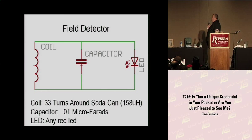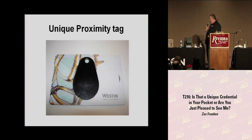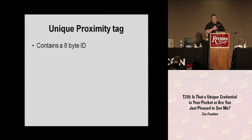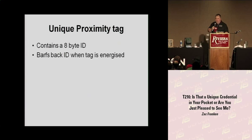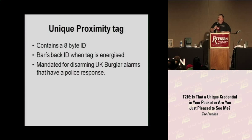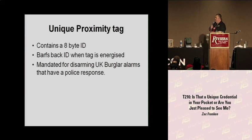We're going to move on to another proximity tag - in this case it's a unique tag, and we'll discover it's not quite so unique. These tags contain an 8-bit byte ID and barf back a single ID when energized. Somewhere at DEFCON there is a long-range reader, and when you're within a couple of feet of it and you have a tag on you, it's going to read the tag out of your pocket and take your photograph. I'm trialing it this year - next year it may well be on the Wall of Sheep, so you might want to think about your tinfoil wallets.